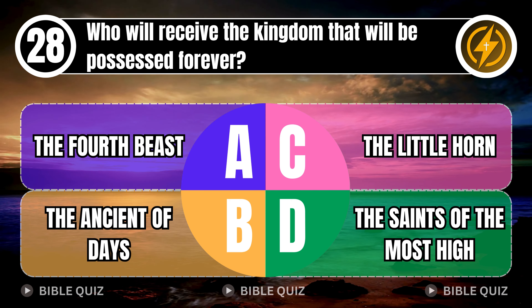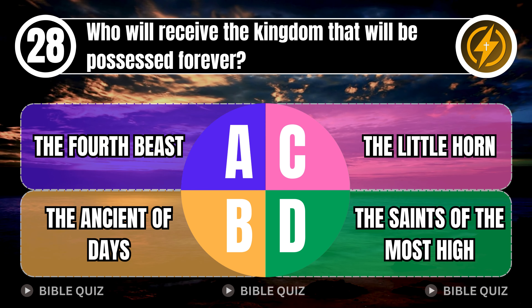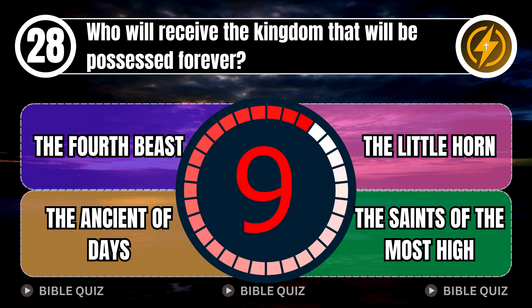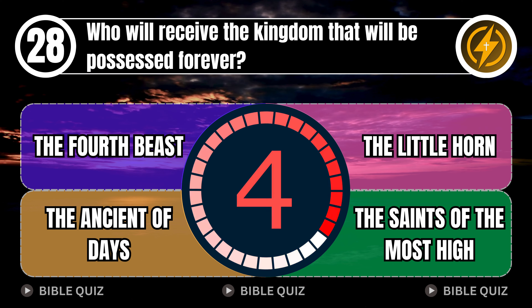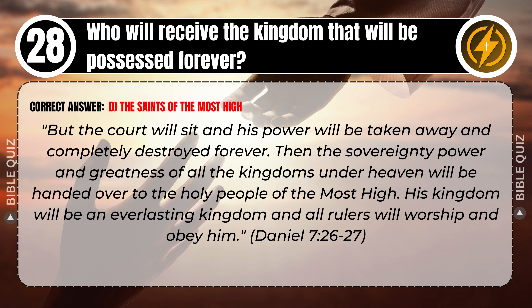Question 28: Who will receive the kingdom that will be possessed forever? A. The fourth beast. B. The Ancient of Days. C. The Little Horn. D. The Saints of the Most High. Correct answer: D. The Saints of the Most High. The court will sit, and his power will be taken away and completely destroyed forever. Then the sovereignty, power and greatness of all the kingdoms under heaven will be handed over to the holy people of the Most High. His kingdom will be an everlasting kingdom, and all rulers will worship and obey him. Daniel 7 verses 26–27.